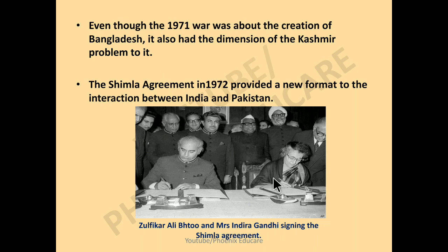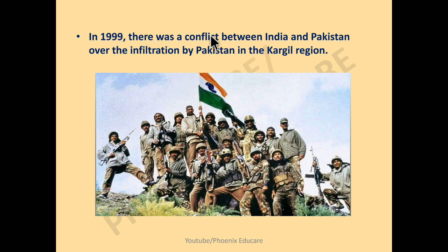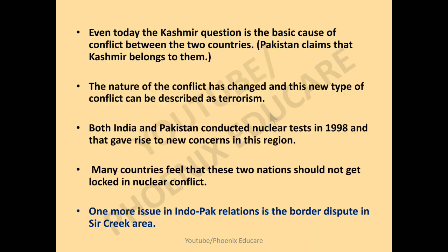After the 1971 war, the Shimla Agreement was signed between Zulfikar Ali Bhutto, Prime Minister of Pakistan, and Mrs. Indira Gandhi, Prime Minister of India — held in Shimla. The third major conflict was the Kargil War, fought in 1999. In the Kargil region, Pakistan illegally occupied Indian territory on high mountain peaks. The Indian Army, through its bravery, re-captured those mountainous areas from Pakistan. Even today, the Kashmir question remains the basic cause of conflict between the two countries.